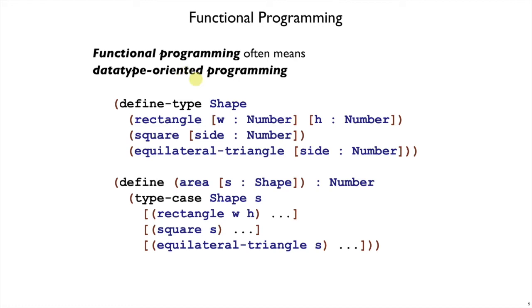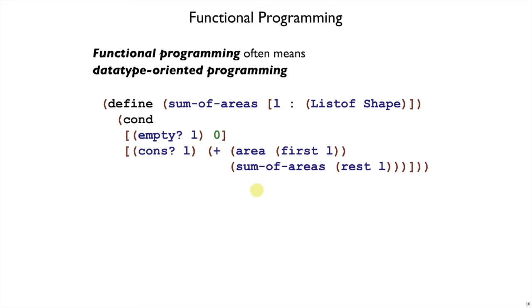Datatype programming means that we define types like shape with their different variants, and then each function that we write that works on shapes has a type case and has to deal with each of the individual variants. And this pattern applies to things like lists as well. Again, a list is either empty or cons. So whether we use type case or whether we use a cond with empty question mark and cons question mark, every function that works on lists deals with the empty and the cons cases.